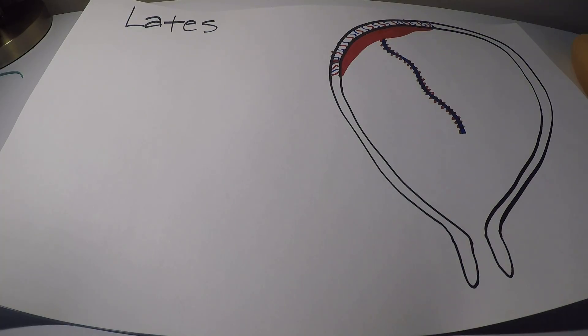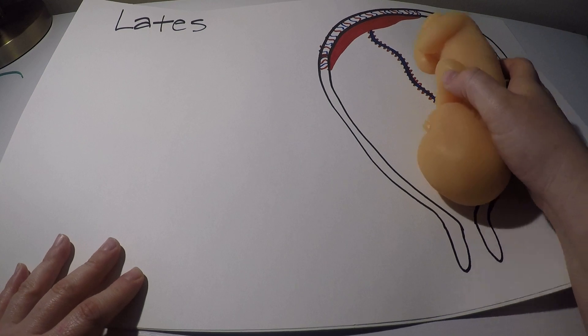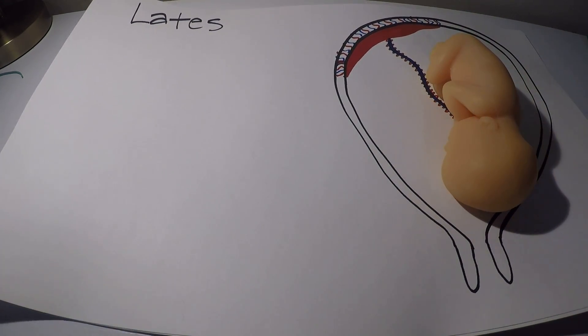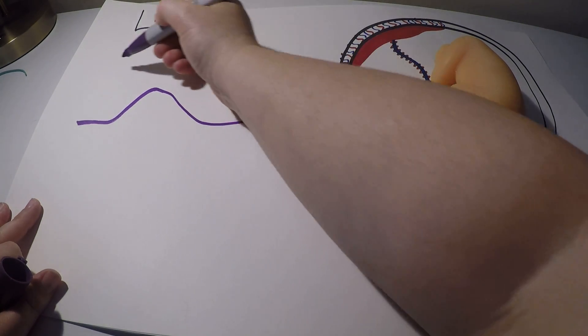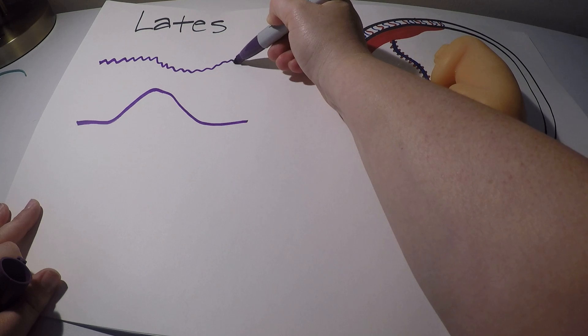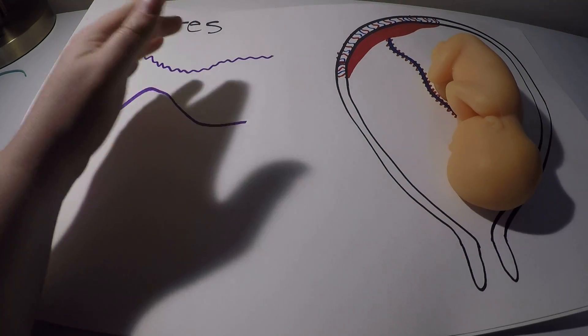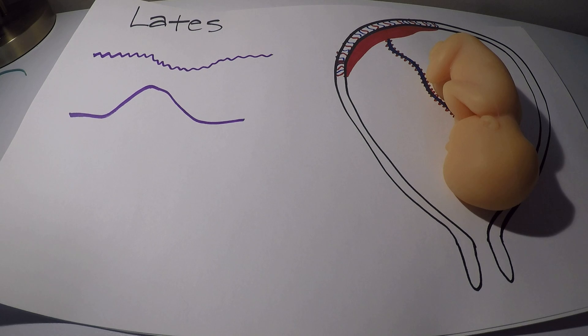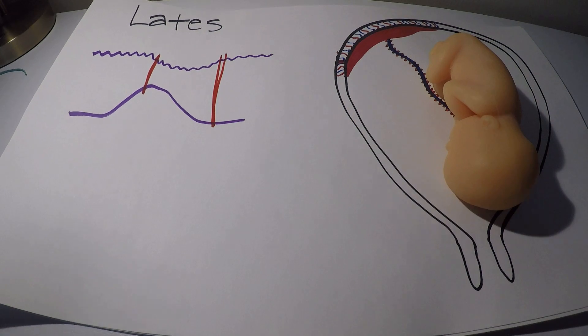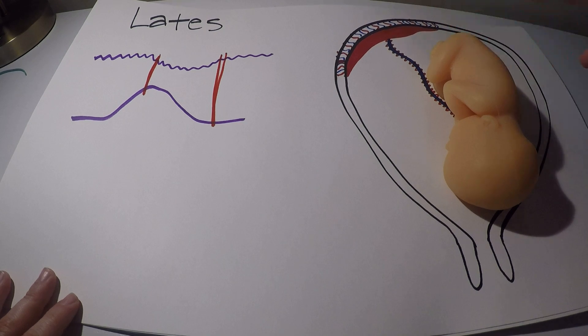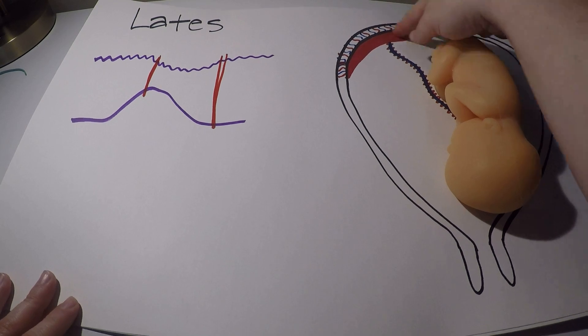The last deceleration we are going to talk about are late decelerations. We'll put baby back in here. Late decelerations are so named because they occur late in the contraction. So what I'm talking about is you're going to have a contraction on the monitor here and you're going to have a deceleration that kind of starts after the peak of the contraction and resolves after the contraction has resolved. So you can see here the deceleration starts right as that contraction is peaking and resolves well after that contraction is done. So as we mentioned earlier, the placenta functions as the fetal lungs essentially while the baby's in utero. This is where all of the oxygenation is taking place and the oxygen exchange.